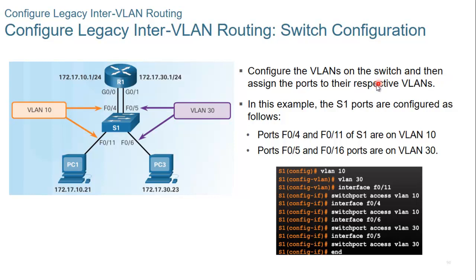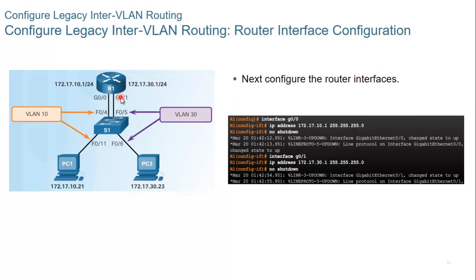To configure this, first configure the VLANs on the switch and then assign the ports to their respective VLANs. You have to create a VLAN and assign interfaces to it so that the hosts attached to those interfaces are assigned to those VLANs. Here we have PC1 in VLAN 10 and PC3 in VLAN 30 — and remember, every VLAN is a different subnet. On the router, configure the interfaces. For example, interface G0/0, because it is attached to VLAN 10, must have an IP address within that same subnet. Don't forget to write 'no shutdown'. The same is done for G0/1, which is attached to VLAN 30 — assign the IP address, the subnet mask, and then 'no shutdown'.